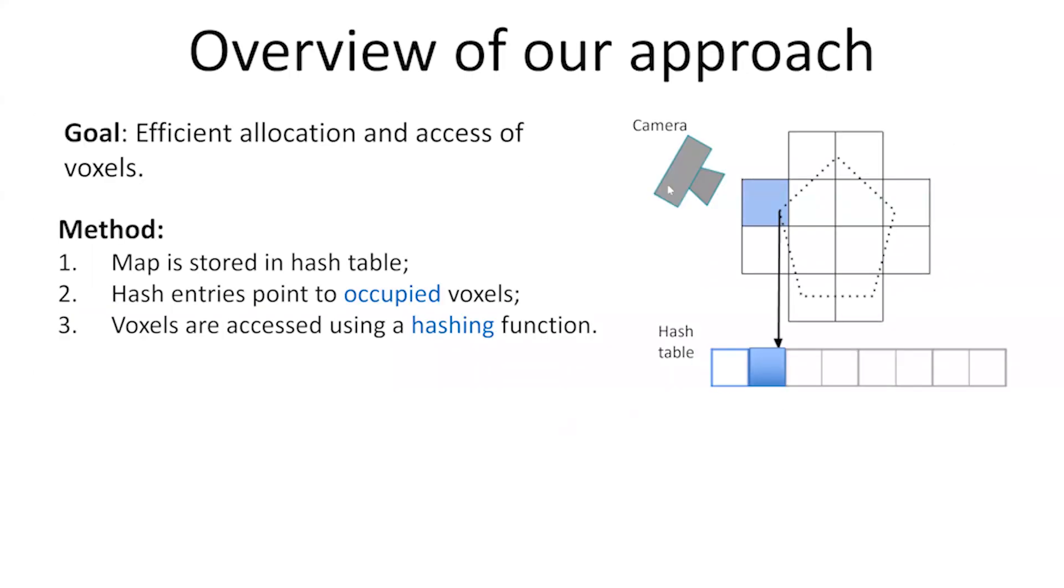Let's see how the voxel map works. The map is stored as a hash table. Each entry in the hash table points to an allocated voxel. A voxel data structure contains its position and a list of points that fall within its volume. These voxels are accessed using a hashing function.